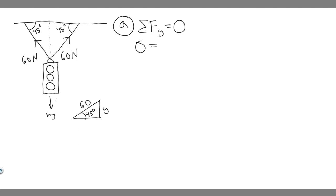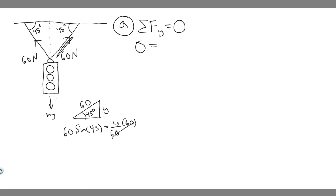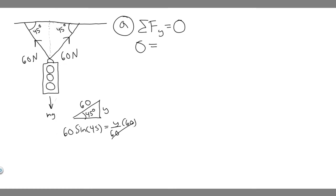We solve for Y using trig. The sine of 45 degrees equals opposite over hypotenuse, so sine(45°) = Y/60. Multiplying both sides by 60, we find Y = 60 × sine(45°), which is the vertical component of this tension force. Both cables are identical — 60 newtons each at 45 degrees — so we have two of them, meaning the total is 2 × 60 × sine(45°).